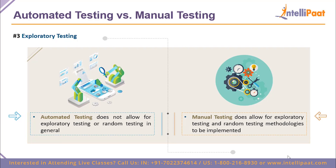Manual testing allows exploratory and random testing methodologies to be implemented. By exploratory and random testing, we mean stepping away from the standard test at hand to execute a use case outside the standard operating procedure. A human tester, due to logical reasoning, can figure this out. A computer, however, cannot handle anything outside the scope of its scripts or macros.